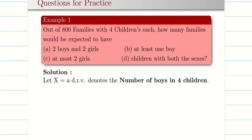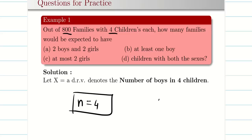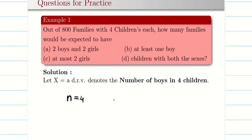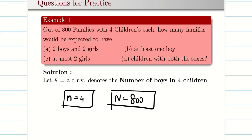Problem 1: Out of 800 families with 4 children each, how many families would be expected to have the following? First, let us identify the data. Small n = 4, because each family has 4 children. Capital N = 800, because 800 families are repeating this. The key thing is: if you identify n incorrectly, the entire problem collapses.